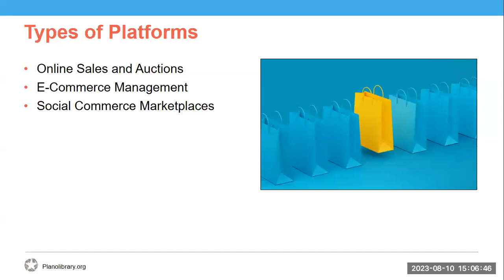Today we will be talking about three different types of online platforms you can use to sell your products: online sales and auction sites, e-commerce management sites, and social commerce marketplaces. We're going to talk about each of these and their related platforms in greater depth in the upcoming slides.